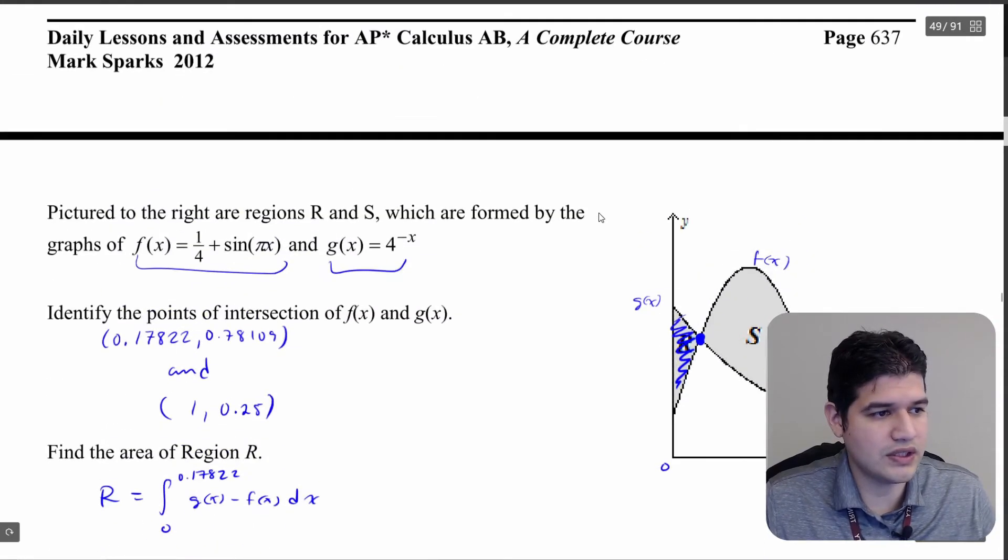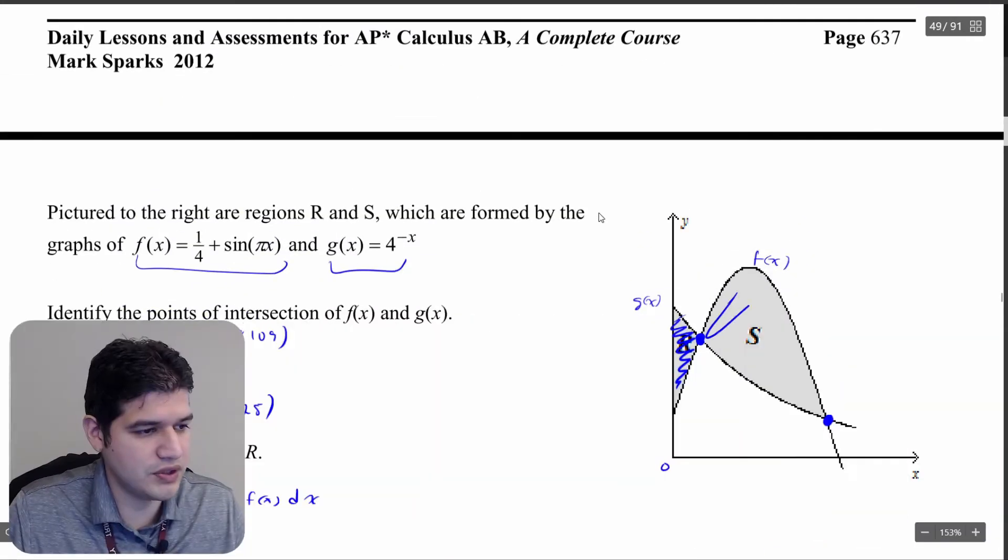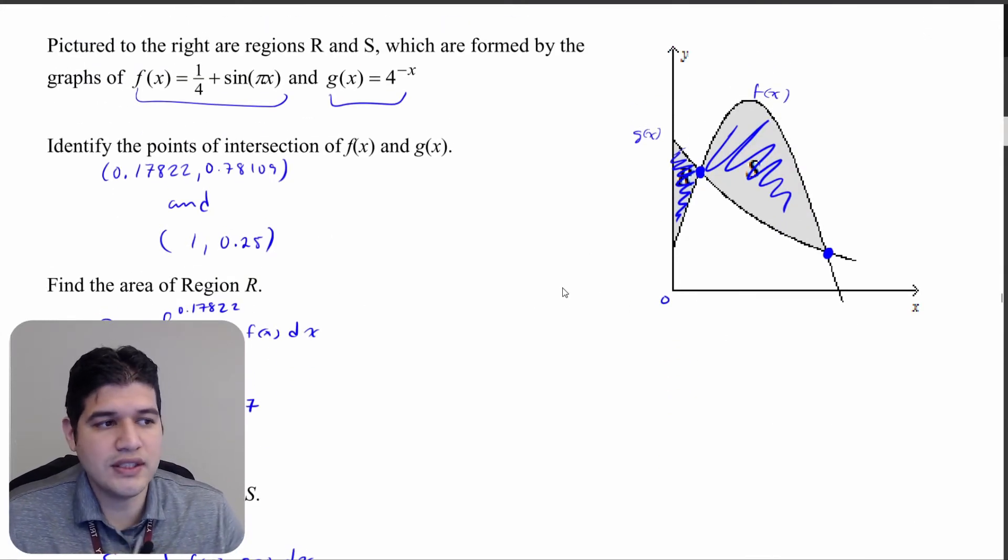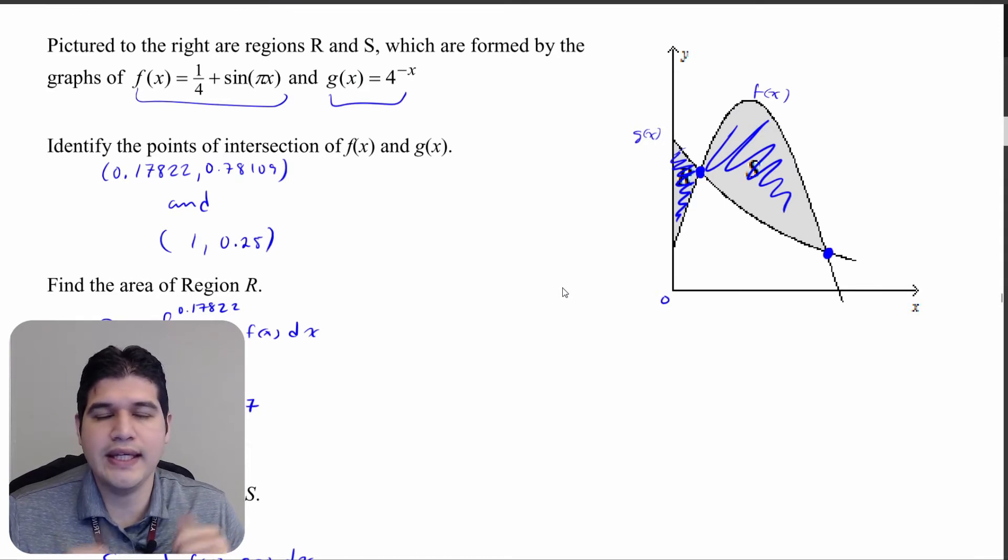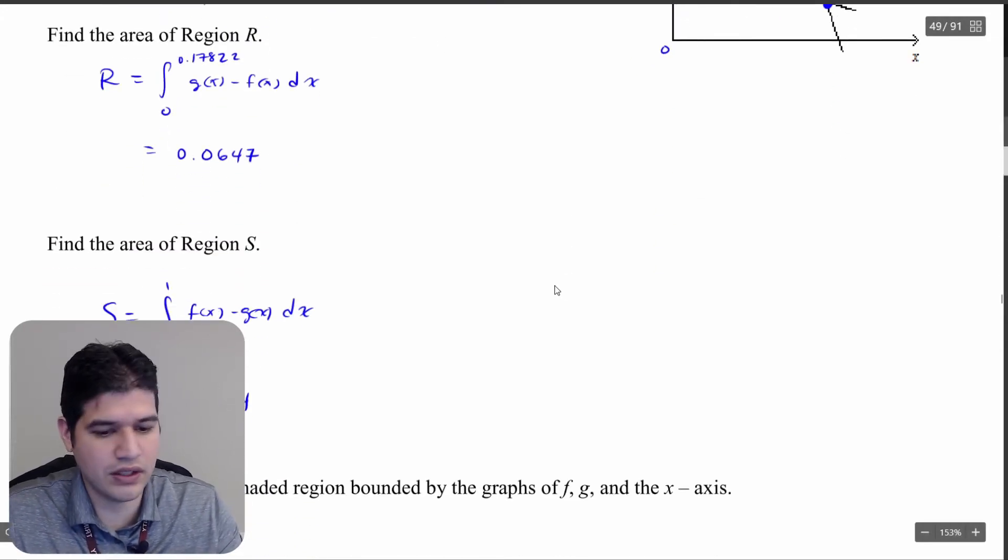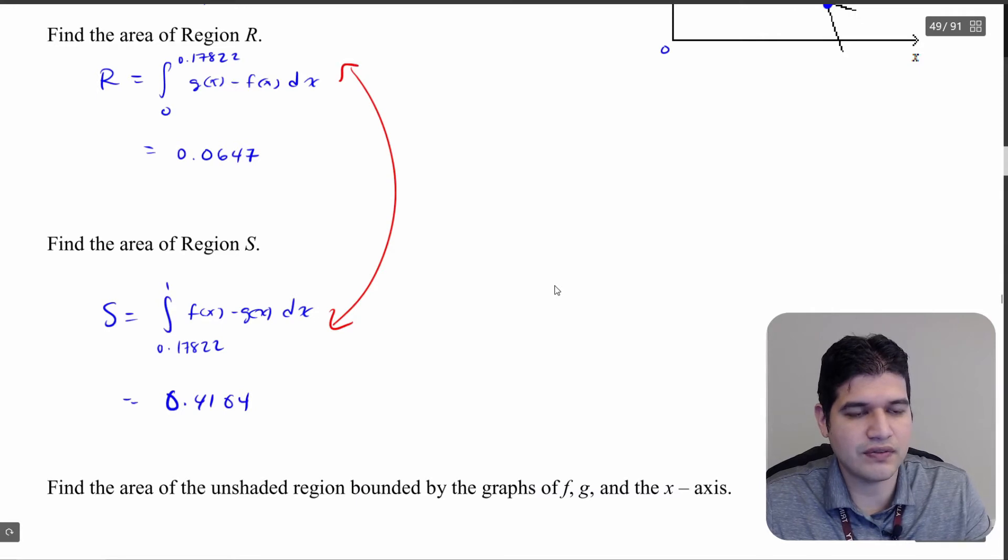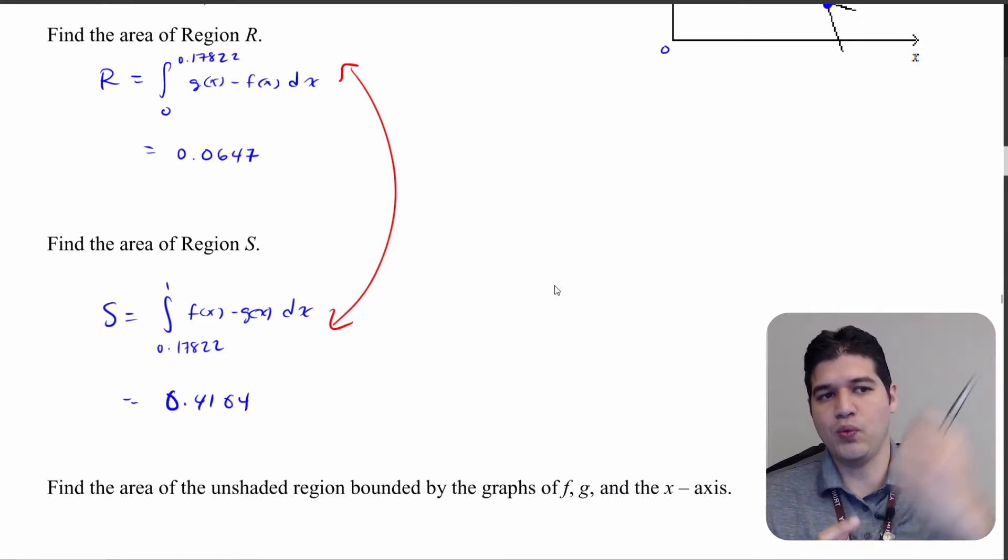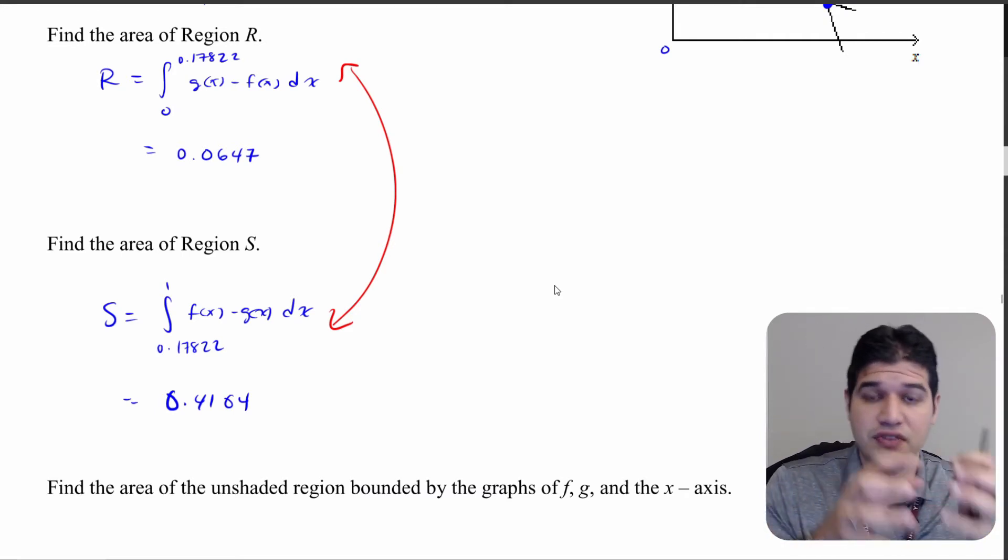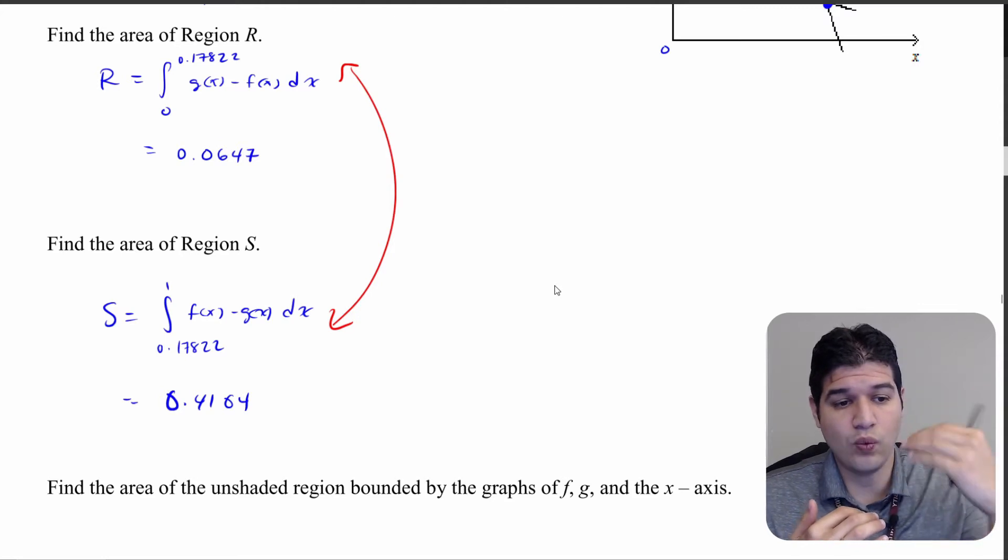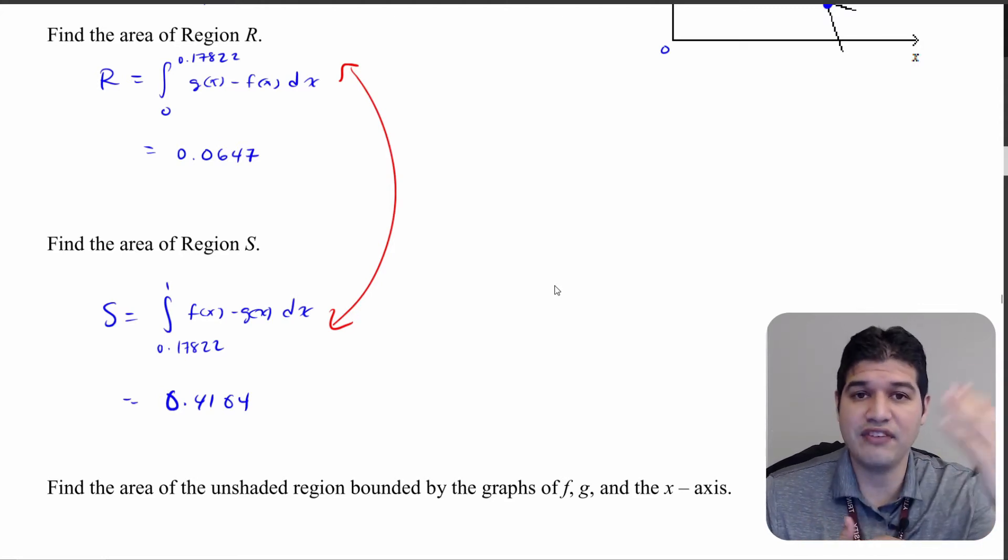So of course what I could have done is I could have said what is the area of region R and region S combined. Well what I would do is I would add these two integrals here that I've just calculated. And I'll write it out like this. So I'm going to say g of x minus f of x from 0 to 0.17822, and then in another function I would add it with this integral from 0.17822 to 1 of f minus g.